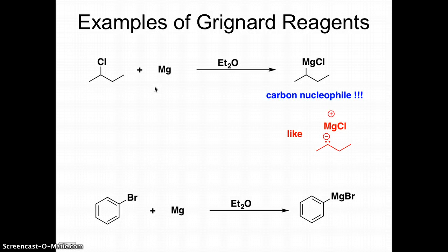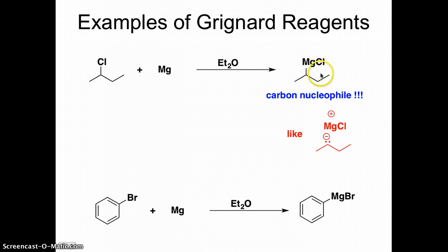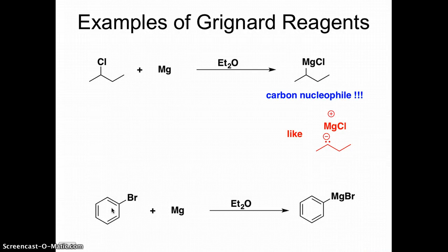Let's look at some examples of how we form these. We take an alkyl chloride and mix it with magnesium metal — in this case using diethyl ether as our solvent — and this is the carbon nucleophile we get. Since this is a carbanion, the electron density from this bond is sitting on that carbon. We don't just have to use alkyl halides; we can use aryl halides as well. Grignard reagents are so commonly used because we can start from relatively inexpensive reagents.